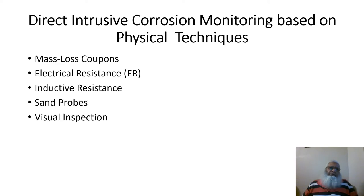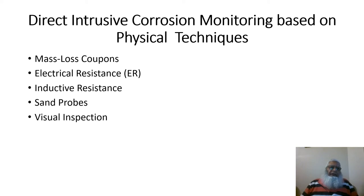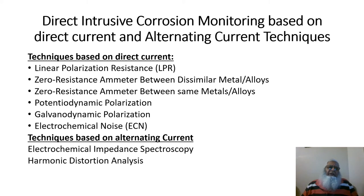This slide shows techniques used in direct intrusive corrosion monitoring, including mass loss or weight loss using coupons, electrical resistance probes (ER probes), inductive resistance probes, sand probes, and visual inspection.